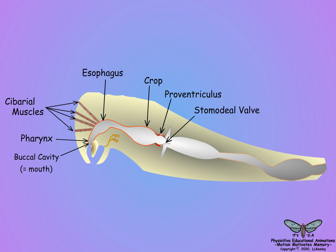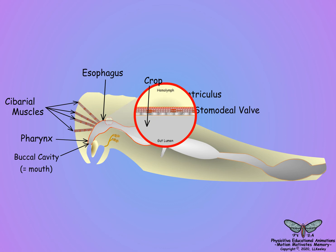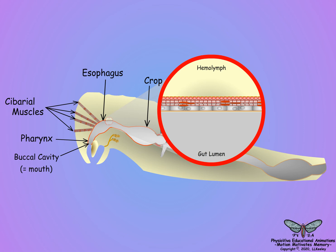Here is a magnification of the cellular structure of the foregut wall. The foregut is lined with flattened squamous epidermal cells derived from the stomadial invagination of the ectoderm layer during embryogenesis. Since the foregut cells are embryologically related to the outer integument epidermal cells, the foregut cells also secrete a chitin-protein cuticle lining into the foregut lumen that consists of unsclerotized endo- and epicuticle.